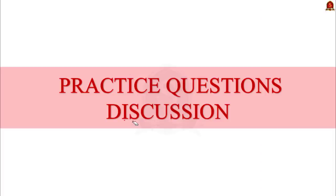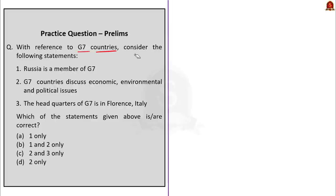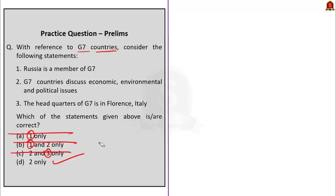Practice prelims questions. Question 1: With reference to G7 countries, consider: (1) Russia is a member of G7; (2) G7 countries discuss economic, environmental, and political issues; (3) The headquarters of G7 is in Florence, Italy. The first statement is wrong — Russia was a member of G8, not G7, and was expelled in 2014. The second statement is correct — G7 has a wide mandate. The third statement is wrong — G7 has no headquarters as it is an informal organization. Answer: D, 2 only.